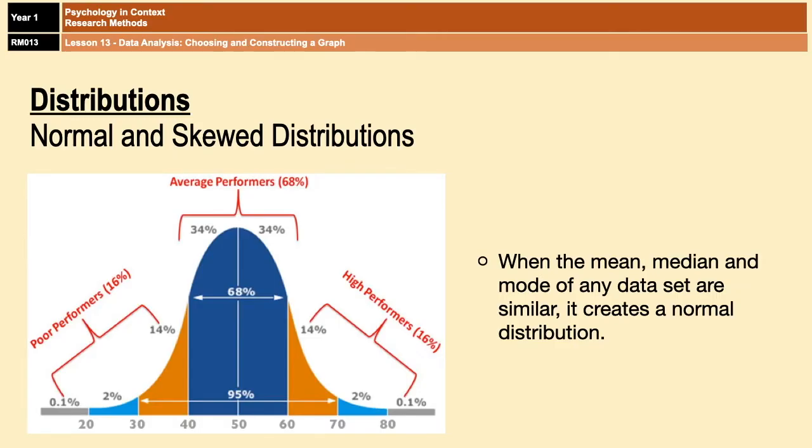To start us off, if you were to measure certain variables across a particular population, such as height, or the IQ of all the people in your school, or scores on a psychology test in your year group, you'd find that the mean, median, and mode are all very similar. And that creates what's known as a normal distribution.